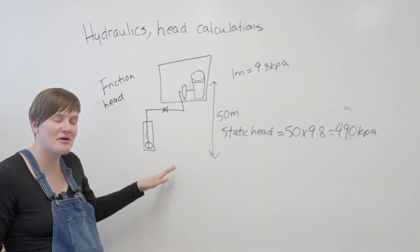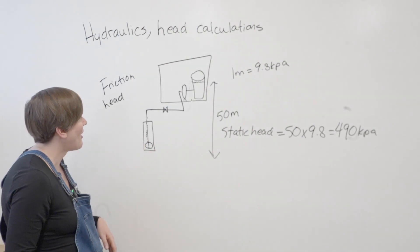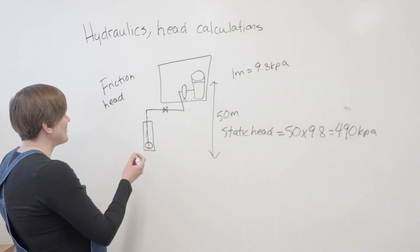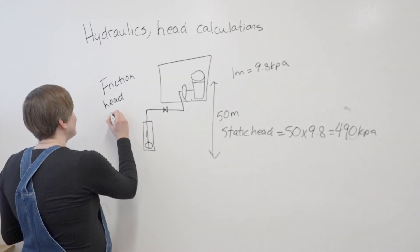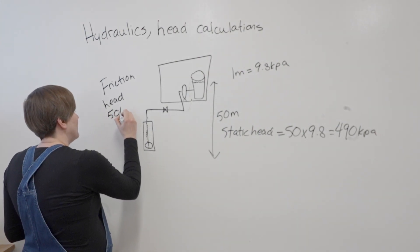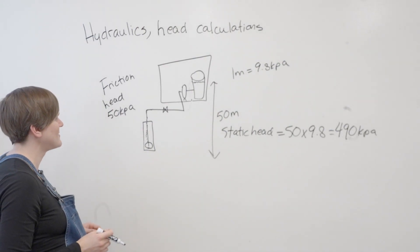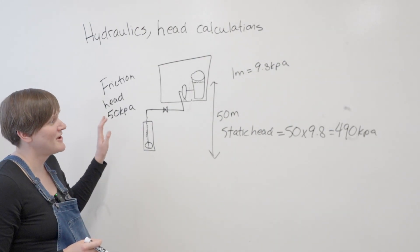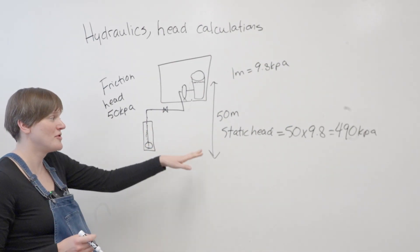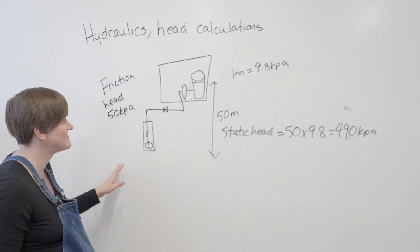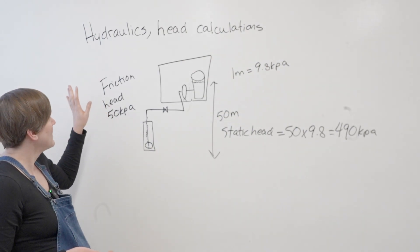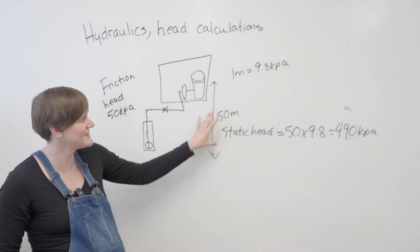So let's just say after doing the long, very complicated calculation, it's determined that the friction head is 50 kPa. Just pulling that number out of my head. Typically I see that the friction head is lower than the static head, but it may not always be. So now we have a friction head and a static head.